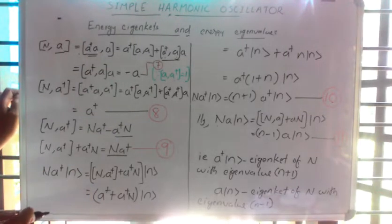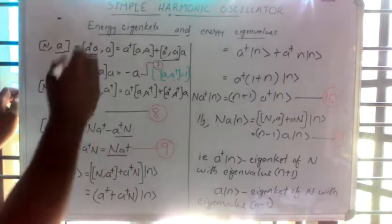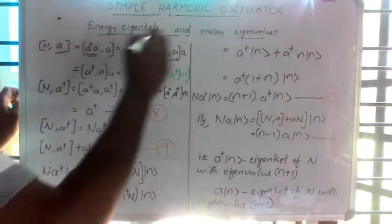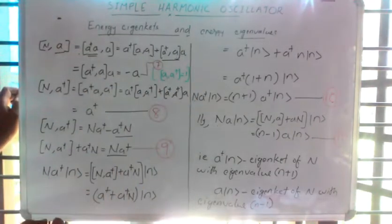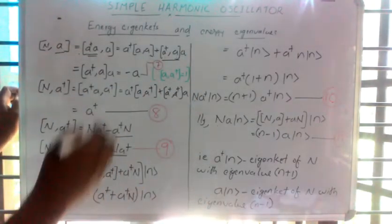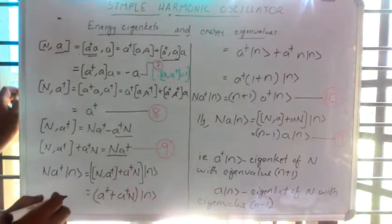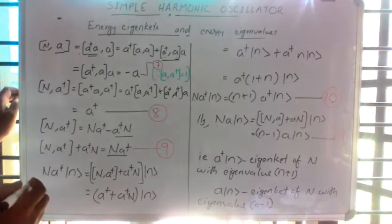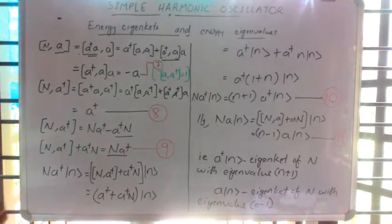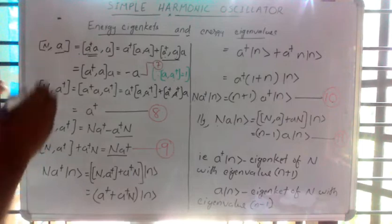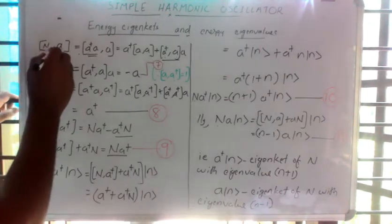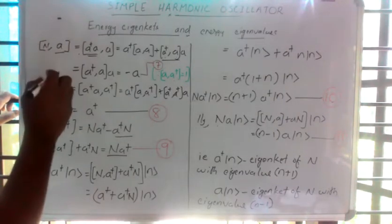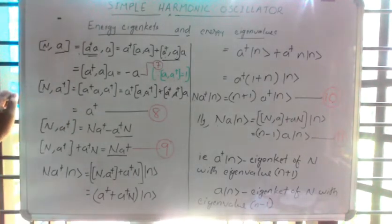Hi friends. Since this is the continuation of last class, you have to go through the previous one for better understanding. In this class, I am going to express the significance of two non-affirmation operators a and a dagger, which we defined in last class.